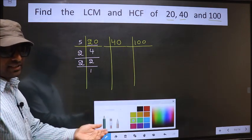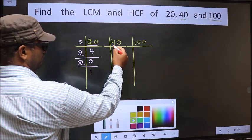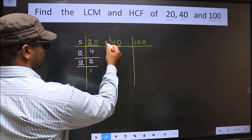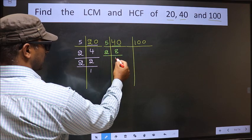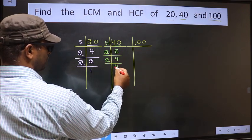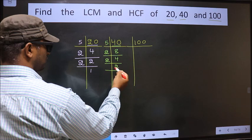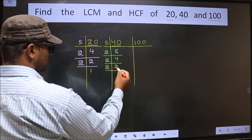Now the other number 40. 40 is 5, 8 is 40. 8 is 2, 4 is 8. 4 is 2, 2 is 4. Now we have 2. 2 is the prime number so 2, 1 is 2.